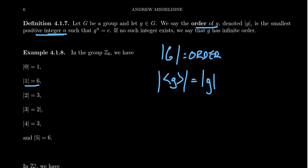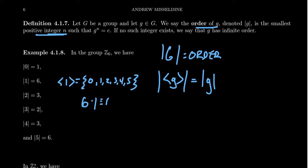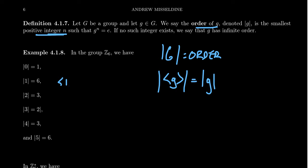The order of the number 1 in Z6 is going to be 6 itself. The cyclic subgroup generated by 1 contains every element of the group: 0, 1, 2, 3, 4, 5 — all six elements. The smallest multiple such that 6 times 1 equals 0 (the identity) is 6, since no smaller multiple works — for example, 5 times 1 is just 5.